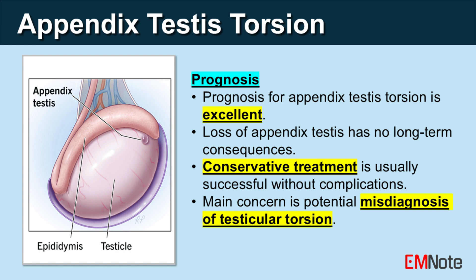Prognosis. The prognosis for appendix testis torsion is excellent. As the appendix testis is a vestigial structure with no known function, its loss due to torsion does not have any long-term consequences. Conservative treatment is usually successful, and the condition resolves without complications in most cases.